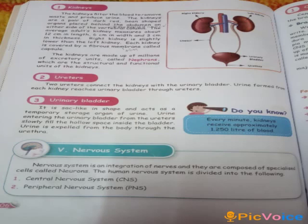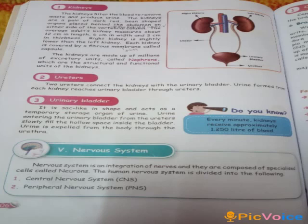Urine formed from each kidney reaches the urinary bladder through ureters. Two ureters connect the kidneys with the urinary bladder. Each ureter joins the urinary bladder. The urinary bladder is sock-like in shape and acts as a temporary storage organ of urine.